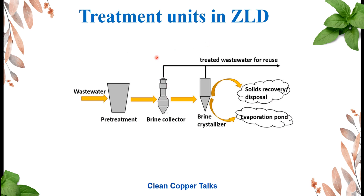In a ZLD system there can be two types of processes: thermal or membrane-based. In a typical thermal-based ZLD schematic, the pre-treatment step involves pH adjustment, de-aeration, or softening to make the wastewater suitable for the next step. The brine concentrator uses thermal techniques such as mechanical vapor compression to extract pure water for reuse while concentrating the wastewater. This concentrated brine then goes to a brine crystallizer, which removes further water leaving behind solid, powder, or semi-solid waste.